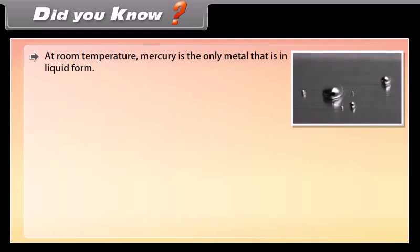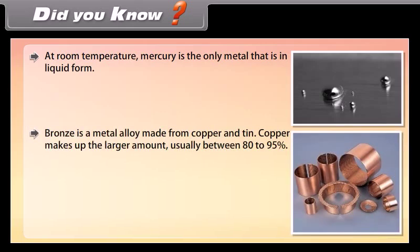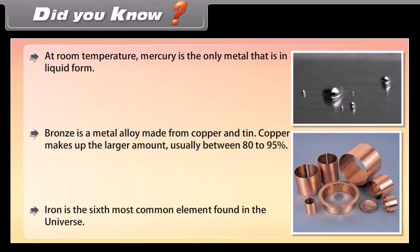Did you know? At room temperature, mercury is the only metal that is in liquid form. Bronze is a metal alloy made from copper and tin. Copper makes up the larger amount, usually between 80 to 95 percent. Iron is the sixth most common element found in the universe.